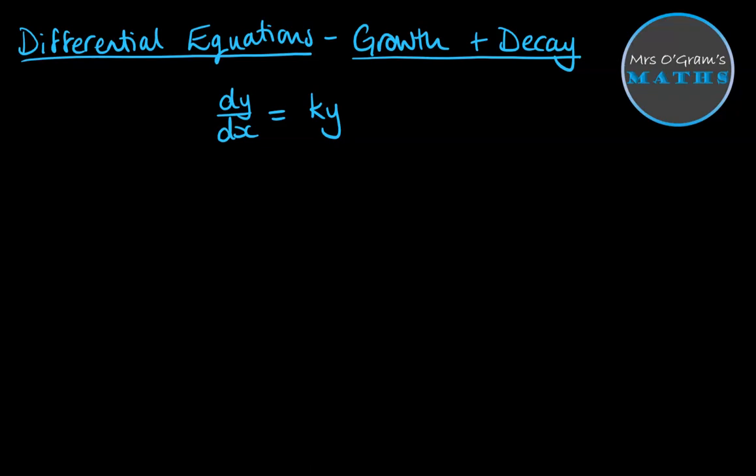Now if we work through this using the method of separating variables, we need to get y onto the same side as dy. So we end up with 1 over y dy. k is just a constant, so we can leave that where it is, and we bring the x over to the other side to separate it away from the y's.